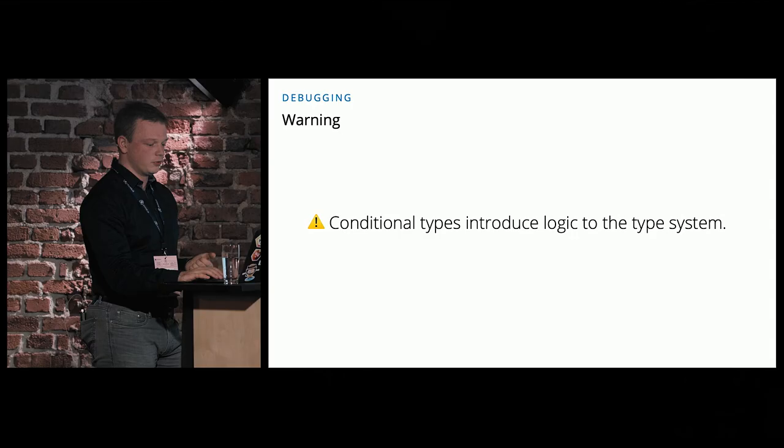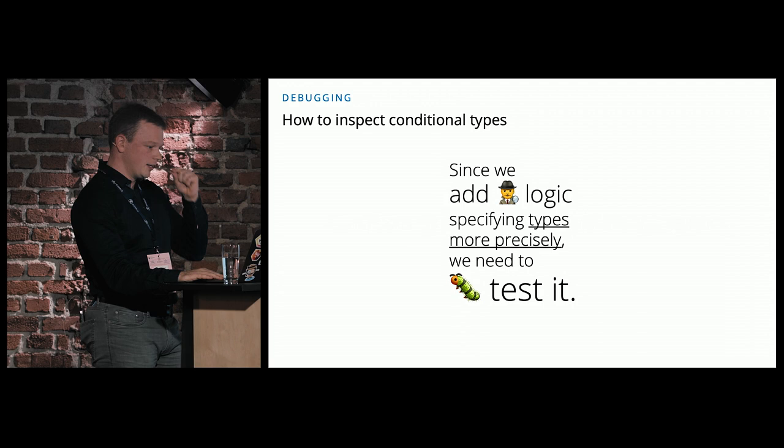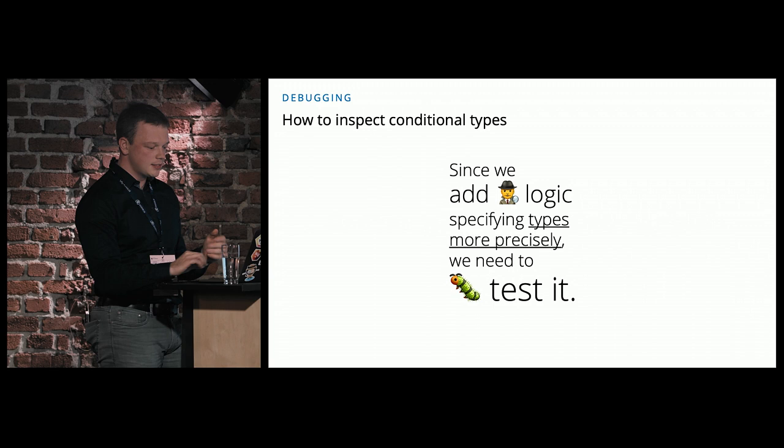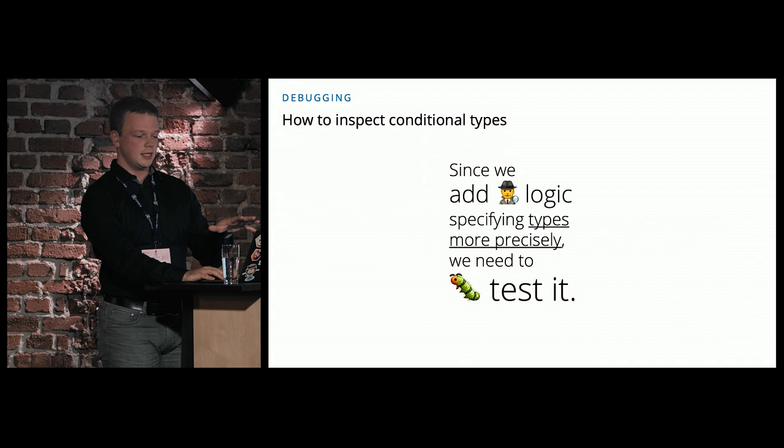We need to be a little bit careful when it comes to conditional types. A conditional type, since it is a ternary expression or some kind of if-else for types, adds logic to your type system. This means you can also introduce bugs into your type system. Since we are all human — as we learned today in the code review talk — everyone can make mistakes. There is really a disclaimer for that: be a little bit careful. There is potential to make some mistakes. And since we can make mistakes, it is also necessary that we are able to test those conditional types.